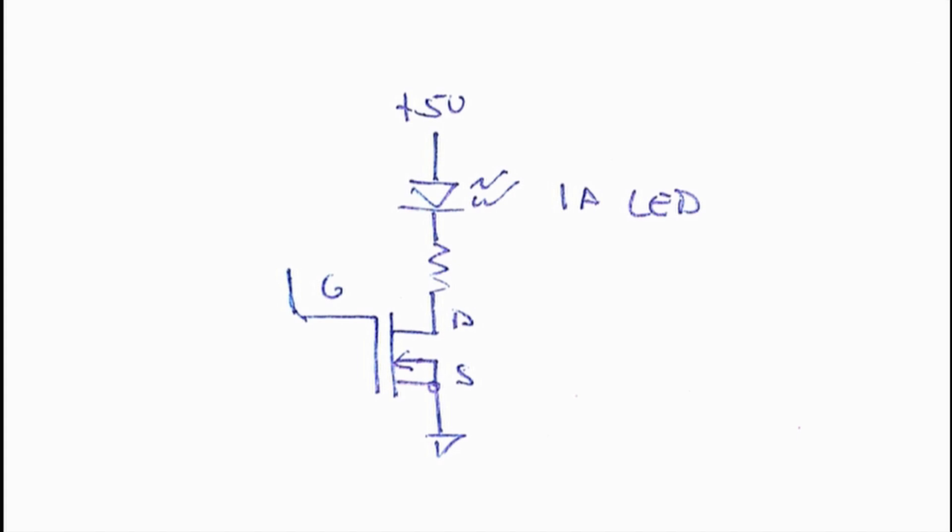And in fact, the on resistance of this power MOSFET is on the order of 20 milliohms. It's pretty small. So when you figure out the power that's being dissipated in a MOSFET, well, when it's off, how much power gets dissipated when no current flows?